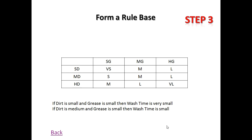In step three, we form a rule base. The linguistic variables for dirt are: small dirt, medium dirt, and high dirt. Similarly for grease: small grease, medium grease, and high grease. We then map combinations — for example, when dirt is small and grease is small, the wash time should be very short.